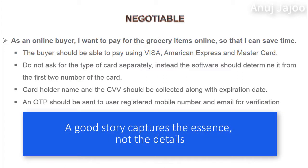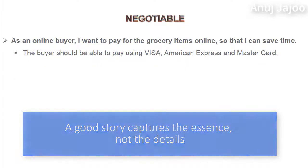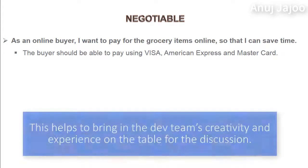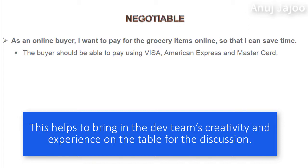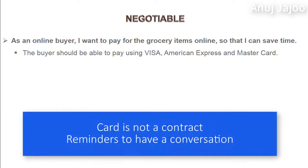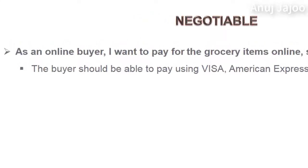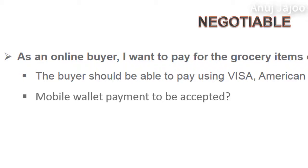A good user story captures the essence, not the details, in the beginning. The details should be co-created by the product owner and development team during development. This helps bring the development team's creativity and experience to the discussion. A story card is not a contract — instead, story cards are reminders to have conversations rather than fully detailed requirements themselves. At the time when the story is written, if some important details are known, they should be included as notes to the story card. The note can also have questions to be discussed further — for example, mobile wallet payments to be accepted.